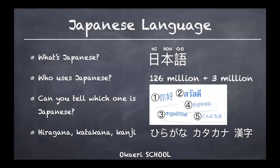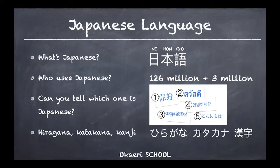Today we're going to talk about the Japanese language. What is Japanese? It's called nihongo in Japanese — nihon meaning Japan and go meaning language — so nihongo is the Japanese language. This language is spoken in the country of Japan, which has 126 million people. Japanese is Japan's official language and for all of them it's the mother tongue.